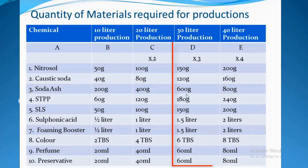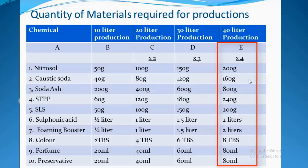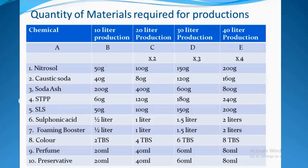In column E we have 40-liter production. To produce 40 liters, multiply all quantities in column B by 4. For nitrosol: 50 times 4 = 200g. For caustic soda: 40 times 4 = 160g. For soda ash: 200 times 4 = 800g. For STPP: 60 times 4 = 240g of STPP. This is basically what you do if you want to produce a large volume.